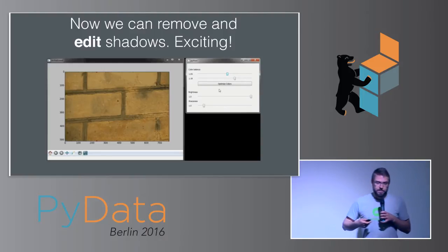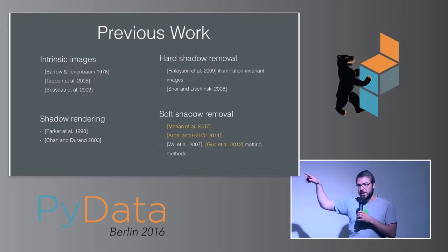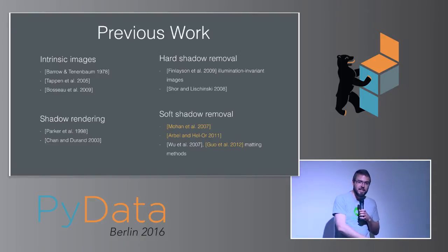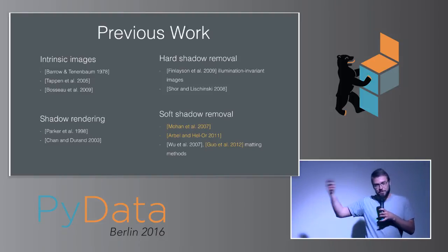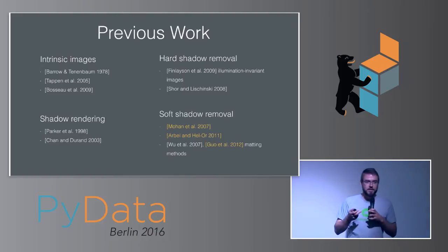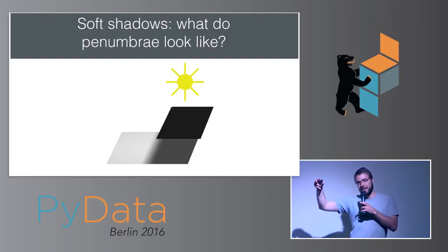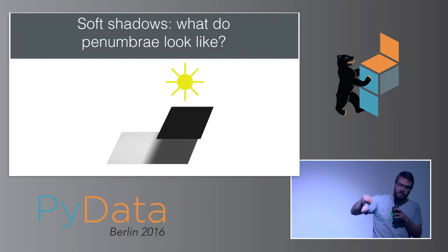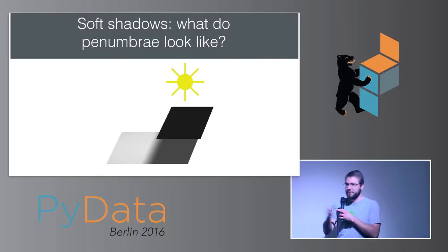We are not the first ones to investigate this problem — there are a couple of related areas. One thing I want to mention is shadow rendering, which is kind of the inverse of what we're doing. There's been lots of research in computer graphics about how to render shadows and make them look realistic. Soft shadows are shadows that have a wide penumbra — the region that's not quite in shadow and not quite out of shadow, a band that goes from completely in shadow to completely out.